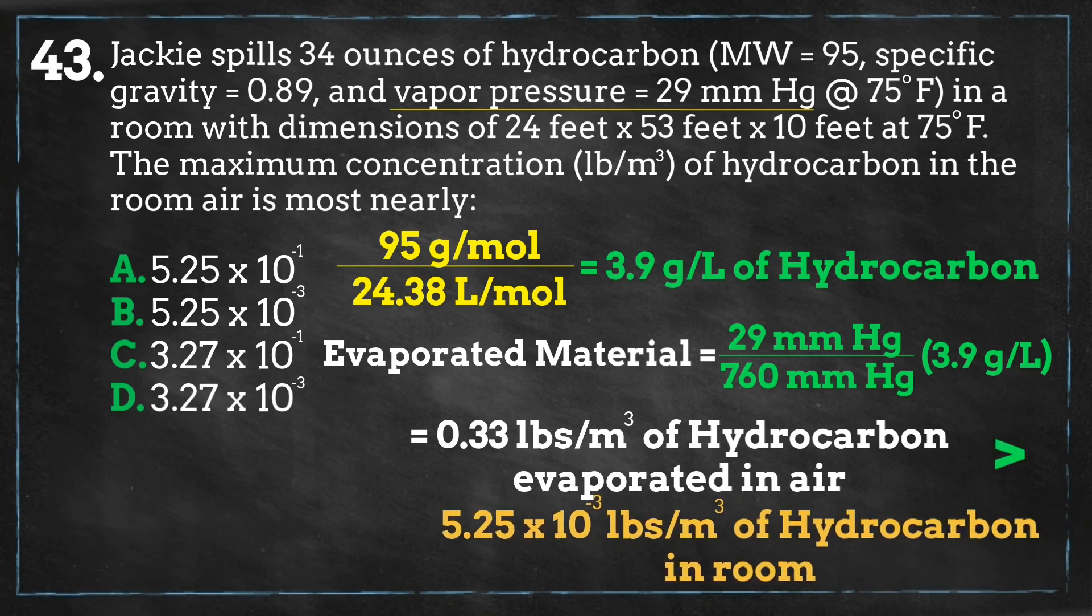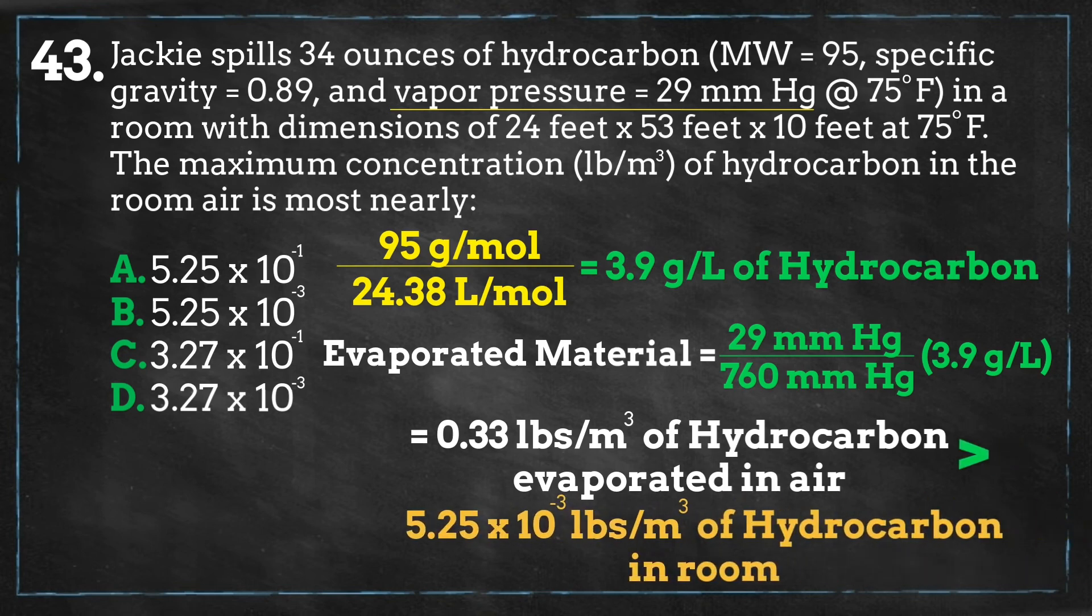Because this is greater than the actual amount of contaminant in the room, we will stick with the amount of 5.25 times 10 to the minus 3 pounds per cubic meter as our maximum concentration, which is answer B.